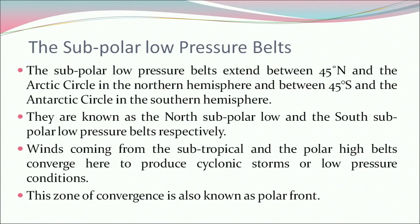The subpolar low pressure belt extends between 45 degrees north and the Arctic Circle in the northern hemisphere, and between 45 degrees south and the Antarctic Circle in the southern hemisphere — known as the north and south subpolar low pressure belts respectively. Winds coming from the subtropical and polar high belts converge here to produce cyclonic storms and low pressure conditions. This zone of convergence is also known as the polar front.